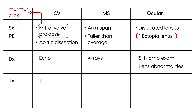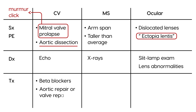The first medications to discuss are beta blockers. Beta blockers are known to lower myocardial contractility, and that can reduce the progression of aortic dissection. As you know, beta blockers are used commonly for management of blood pressure, and they can also help prevent cardiovascular complications in Marfan syndrome. In serious cases, you can also do aortic repair or valve repair.